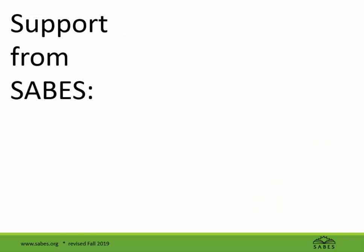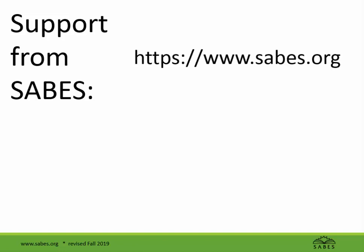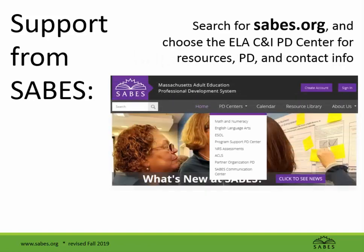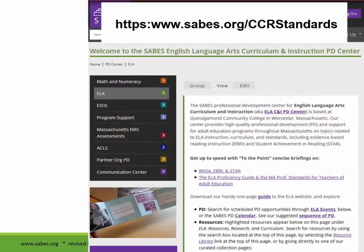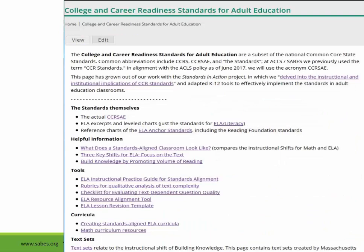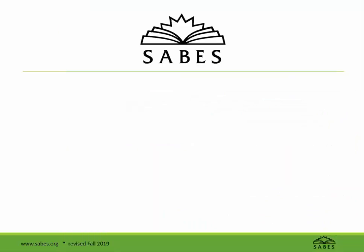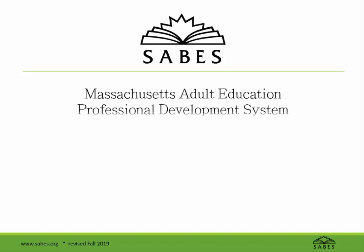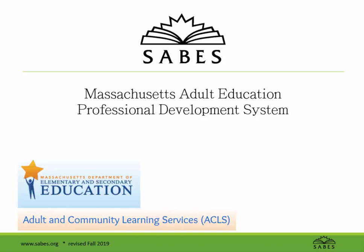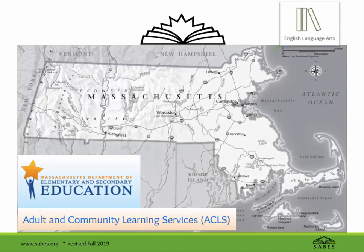All of the documents and websites mentioned in this introduction, plus additional resources and professional development, can be accessed from the SABES ELA website. Search for sabes.org, then choose the ELA Center for Resources, PD, and Contact Information. You may also go directly to our CCRSAE page shown here. SABES — the System for Adult Basic Education Support — is funded by the Massachusetts Department of Elementary and Secondary Education, Adult and Community Learning Services Division. SABES provides professional development and support to state-funded adult education programs in Massachusetts. The SABES ELA Curriculum and Instruction PD Center is centrally located in Worcester, Massachusetts, at Quinsigamond Community College. Thank you.